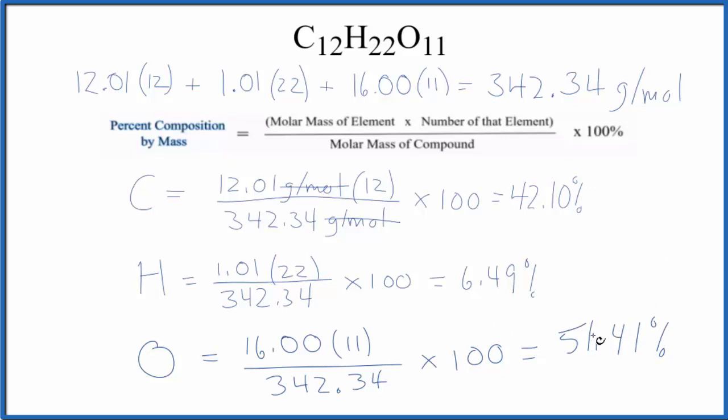They may not exactly be 100. I'm rounding to two decimal points, but they should be very, very close to 100. This is Dr. B with the percent composition by mass for each element in C12H22O11. This is sucrose, commonly called sugar. Thanks for watching.